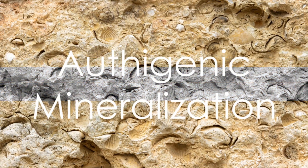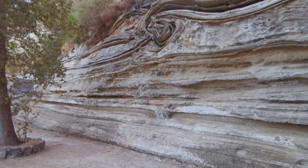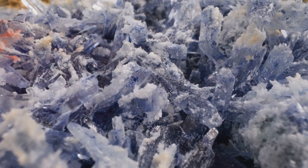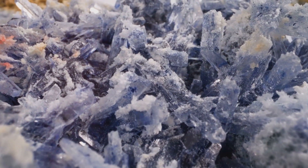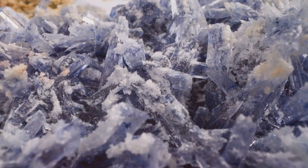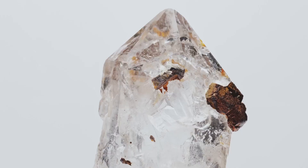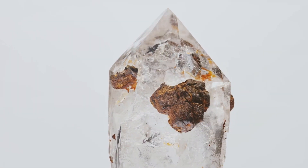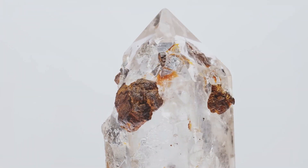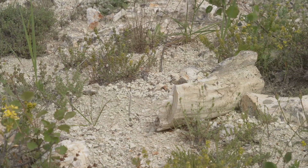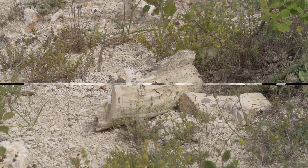Moving on to our third chapter: authigenic mineralization. Authigenic mineralization is a special form of cast and mold formation. If the chemistry is right, the organism can act as a nucleus for the precipitation of minerals, such as siderite, and can result in the formation of a nodule. If this happens rapidly, before significant decay to the organic tissue has occurred, then very fine three-dimensional detail can be preserved. The nodules from the Carboniferous Mazon Creek fossil beds of Illinois, US, are among the best documented examples of such mineralization.